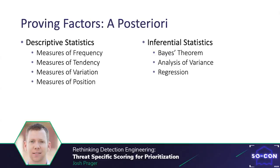We can then feed the data analyzed by descriptive techniques into inferential statistics to determine our probability. Bayes' theorem is used to determine probability from prior collected data. Analysis of variance takes measures of frequency and variance to determine differences between probabilities of variations remaining the same. And regression will aid us in determining the outcome of the score if we were to test the scoring structure in another data set from the same data.